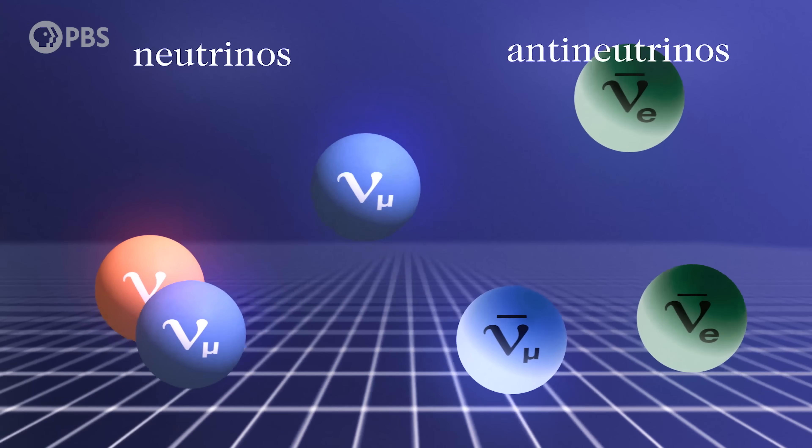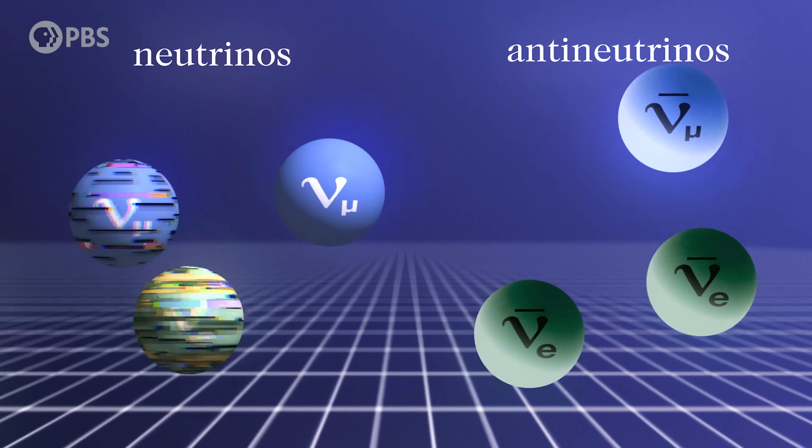With antineutrinos oscillating between the three different types more slowly than matter neutrinos. And that is what the DUNE experiment seeks to detect.